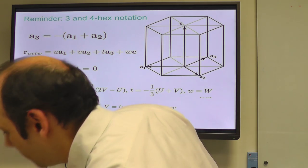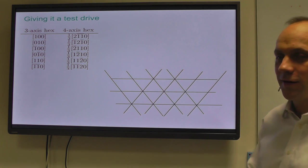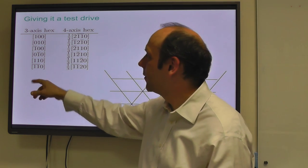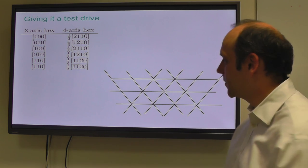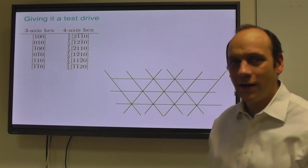One thing to do in the lecture is we'll take some three-axis vectors and convert them to four-axis vectors, write them both out, and check that it works.